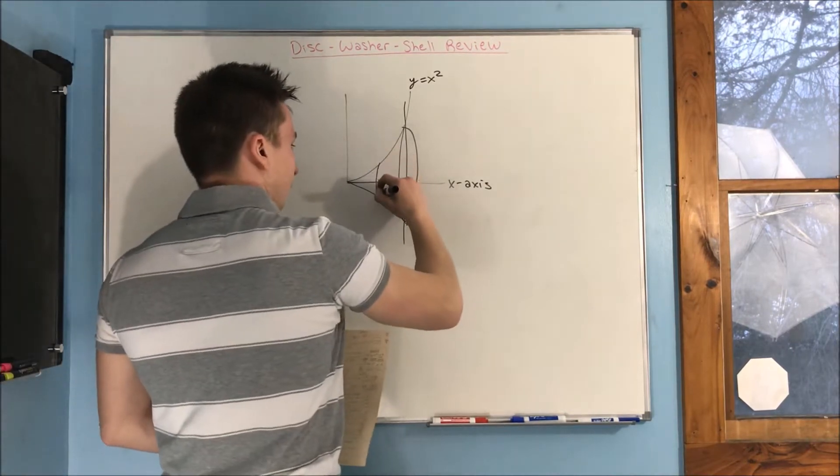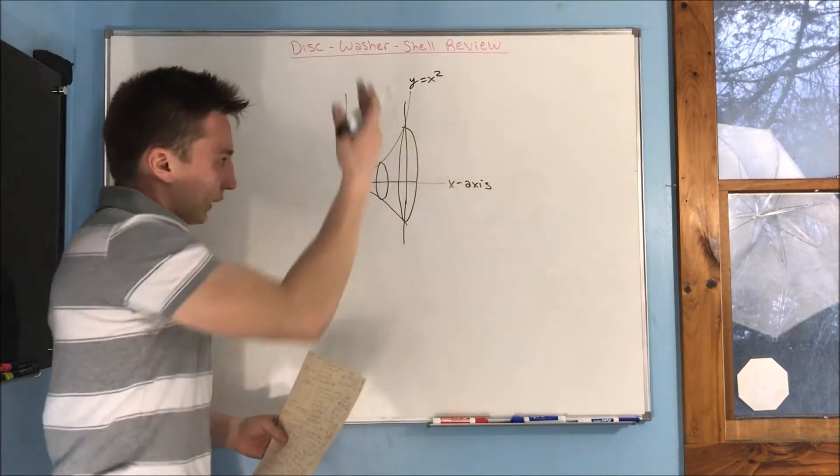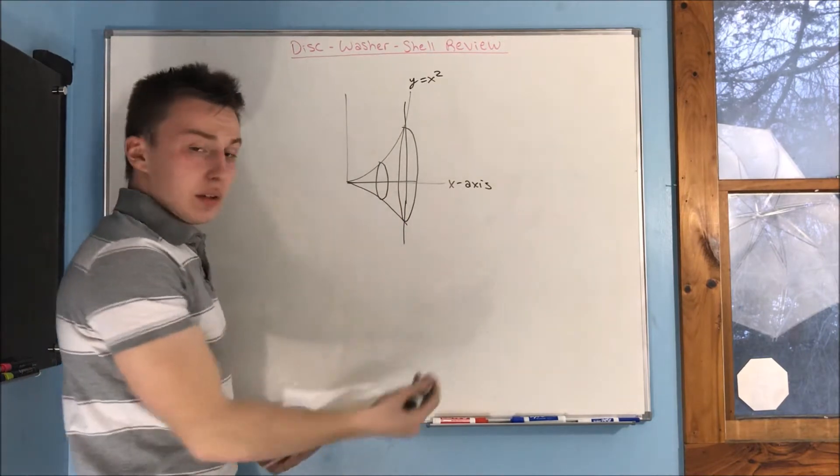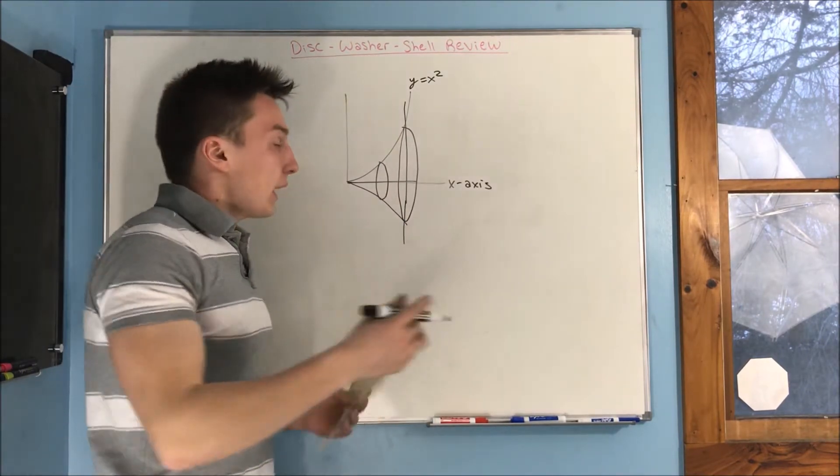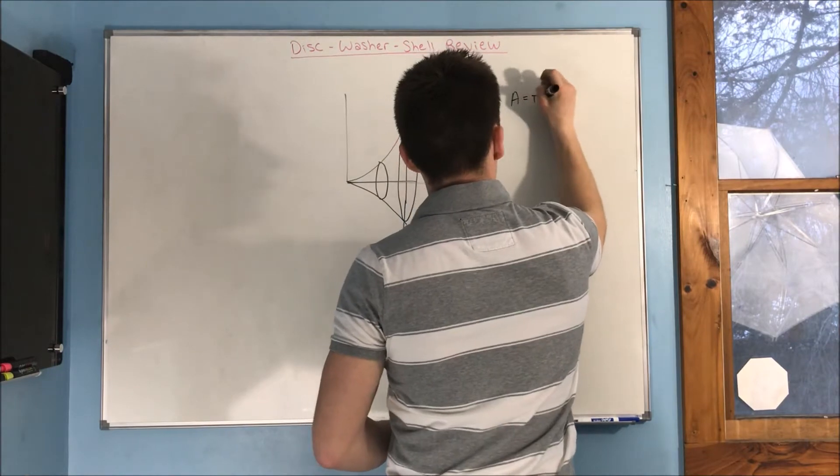And each cross-section of this cone, if we slice it this way, is going to be a circle, right? And that circle has area pi r squared.